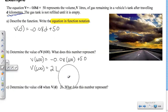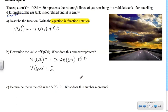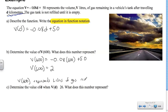V(600) equals 2. V of 600 represents the liters of gas remaining if you traveled 600 kilometers.